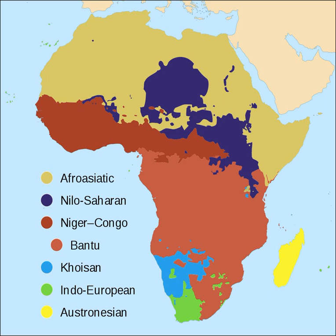A fair number of unclassified languages are reported in Africa. Many remain unclassified simply for lack of data. Among the better investigated ones that continue to resist easy classification are: Ongota, possibly Afroasiatic; Gumuz, possibly Nilo-Saharan; Shabo, possibly Niger-Congo; Jalaa; Mbre; Baka, possibly Khoisan; Kwadi, unknown; Laal; and Mpra. Of these, Jalaa is perhaps the most likely to be an isolate.